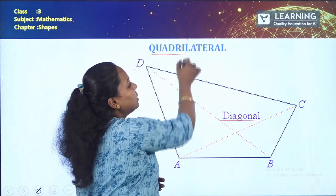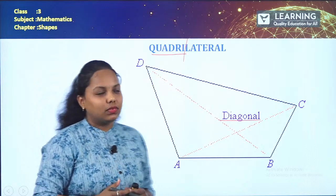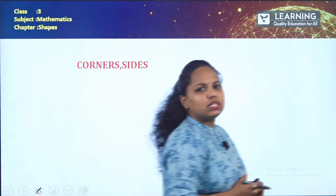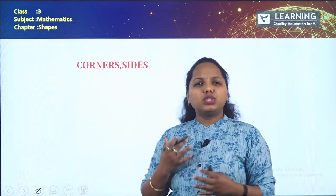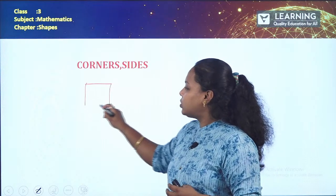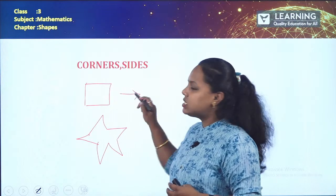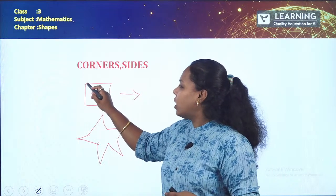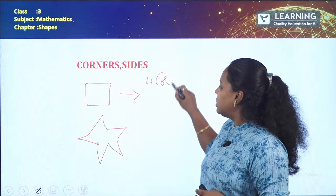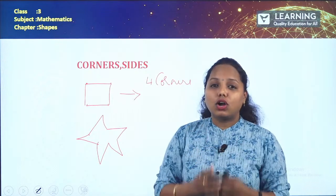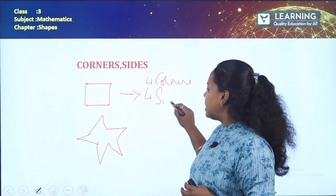Apart from triangles, what other shapes do we have? We have square shape and star shape, among many others. For the square: counting the corners — 1, 2, 3, 4 — this has four corners. And the sides — 1, 2, 3, 4 — this also has four sides. So a square has four corners and four sides.